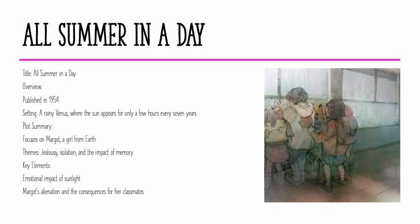The last story we'll be looking at is All Summer in a Day, published in 1954. It is set on a rainy Venus, a planet where the sun appears for only a few hours every seven years, and focuses on Margo, a girl from Earth. The themes here are jealousy, isolation, and the impact of memory. Key elements include the emotional impact of sunlight, Margo's alienation, and the consequences for her classmates. Thank you very much for listening — hope this was useful.